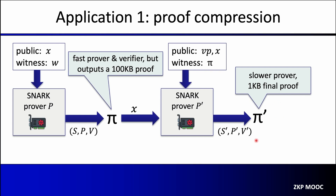The point is: if the circuit C we're proving is gigantic, constructing a proof directly using the outer system would be slow. Instead, we use the inner proof system to quickly produce a proof for the large circuit C. That generates a large proof, but then we run the outer system only on the verification circuit of the inner system. If the verifier circuit for the inner system is smaller than C, the outer system will work much faster than if we had tried to apply it directly to C.